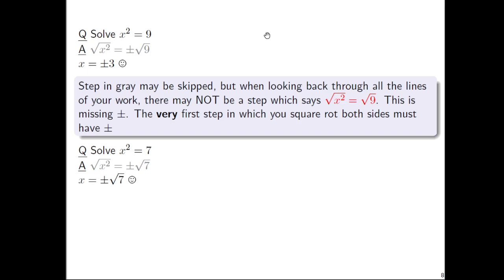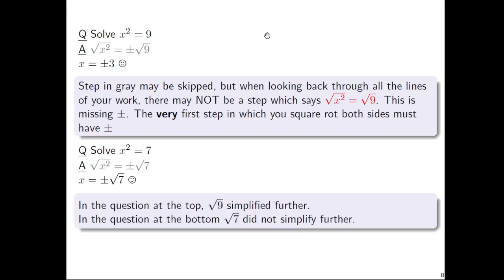And it deals with the fact that in the previous question, 9 is a perfect square, and in this question, 7 is not a perfect square. So √9 simplified further, √7 doesn't simplify further.